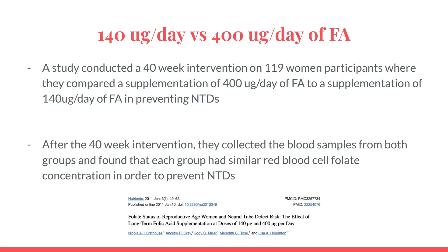A study conducted a 40-week intervention on 119 women participants where they compared a supplementation of 400 micrograms per day of folic acid to a supplementation of 140 micrograms per day of folic acid in preventing neural tube defects. After the 40-week intervention, they collected blood samples from both groups and found that each group had similar red blood cell folate concentration in order to prevent neural tube defects. The study is listed below if you want to search after this video.